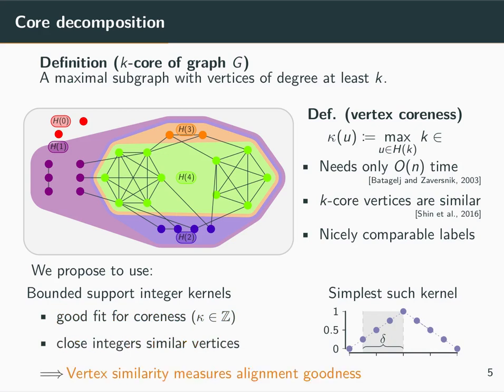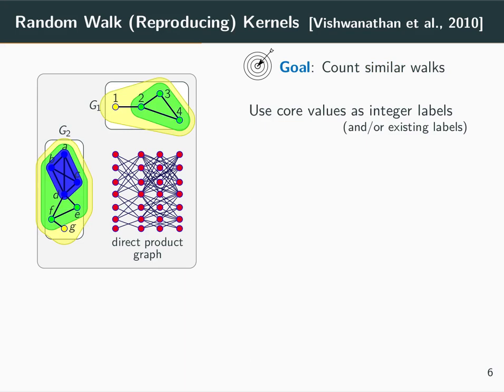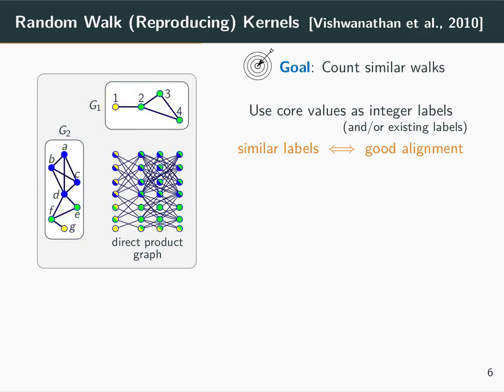So, using this similarity measure on vertices, how does this induce a goodness of alignment? Remember that we want to count similar walks, and if we have no labels in the original graphs, we can simply label them using the core decomposition. This induces a similarity on the alignment.